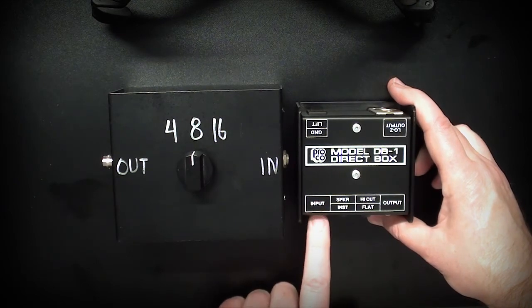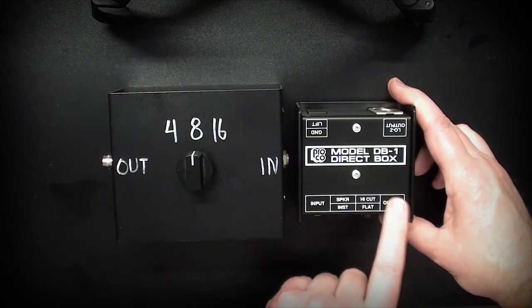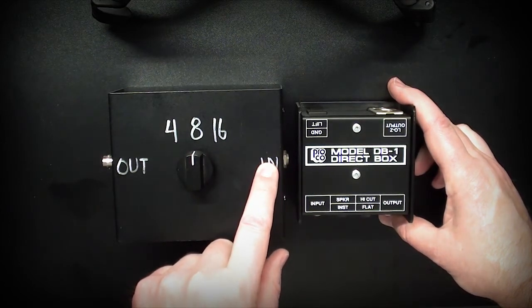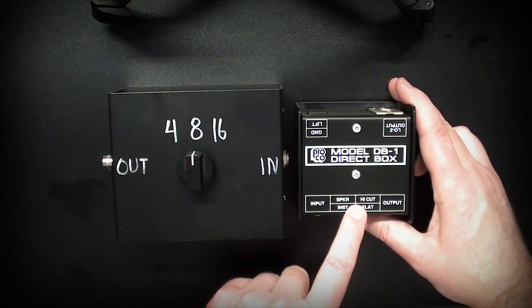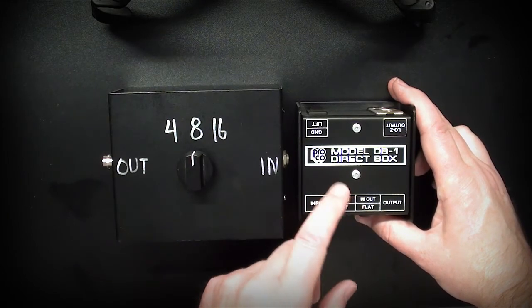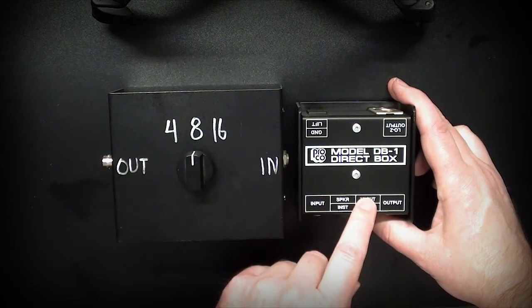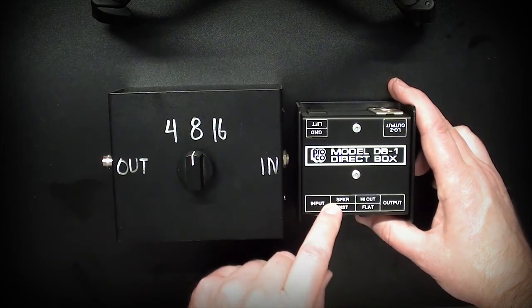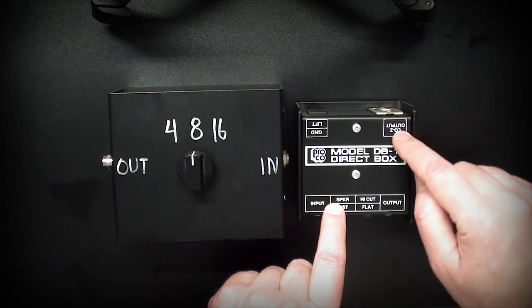You'd plug the output from your amplifier into the input. The output here would then go into the input of the load box. You would set the high cut - if you're using an IR you'd set it flat, and if you were not using an IR you could set it high cut so that it emulates the speaker. Then this low Z output would go to your recording console.